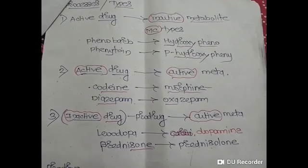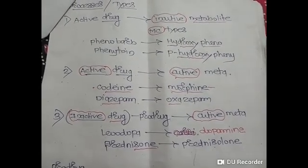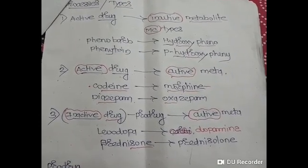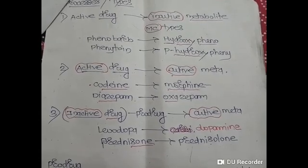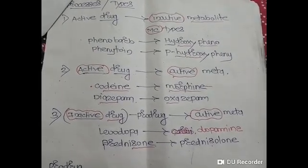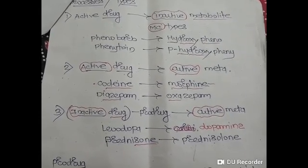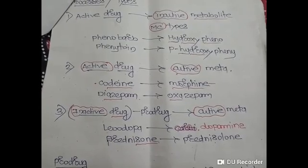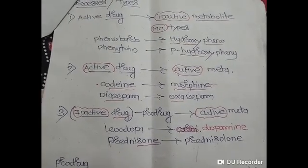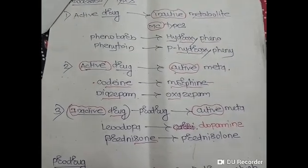Another type is where an active drug is converted into an active metabolite. Here, both forms of the drug act as active moieties. Examples include codeine, which when metabolized converts into morphine, and diazepam, which after metabolism is converted into oxazepam.